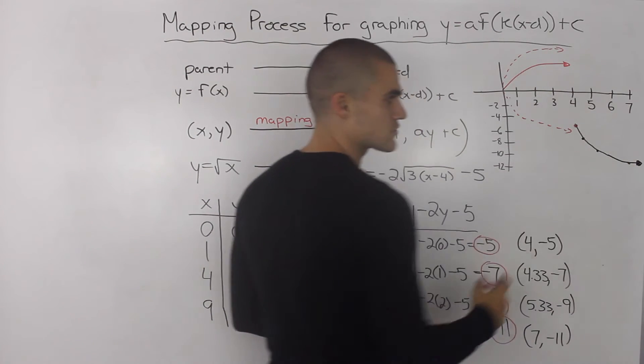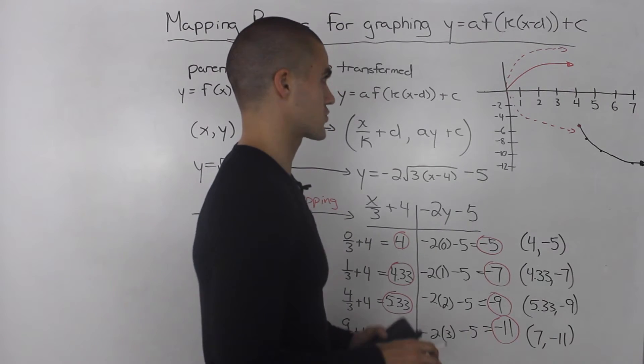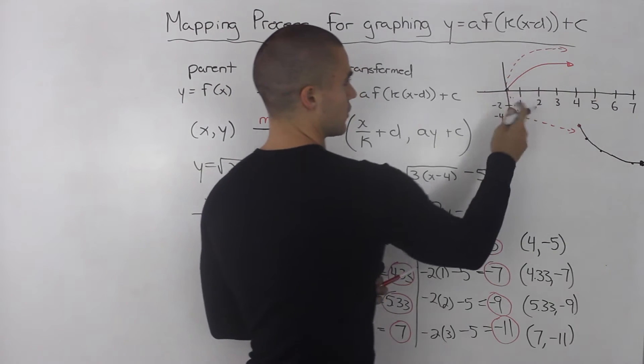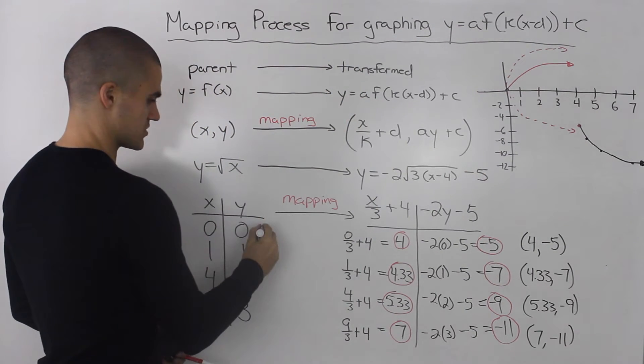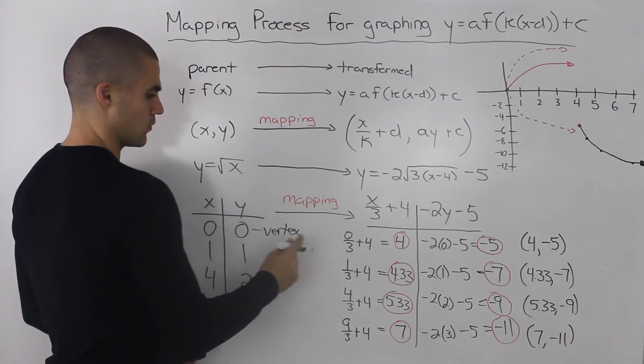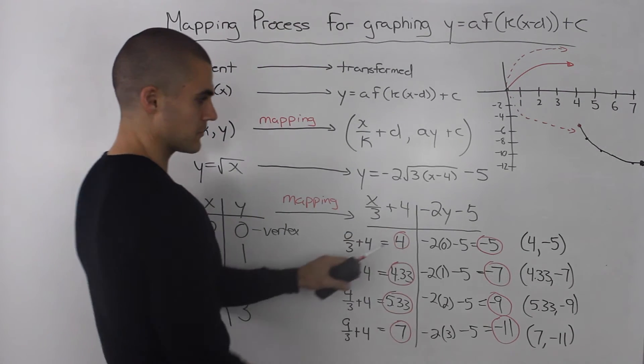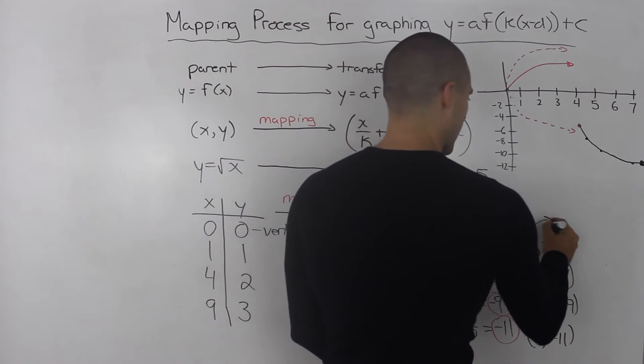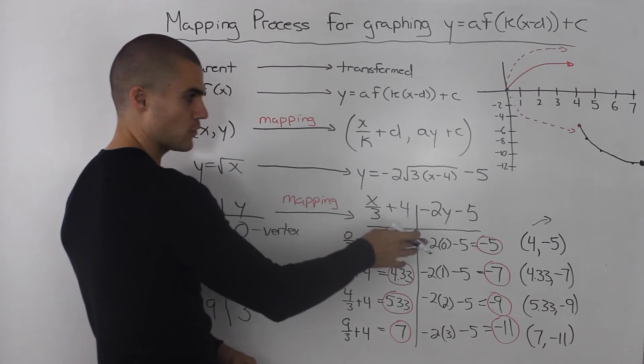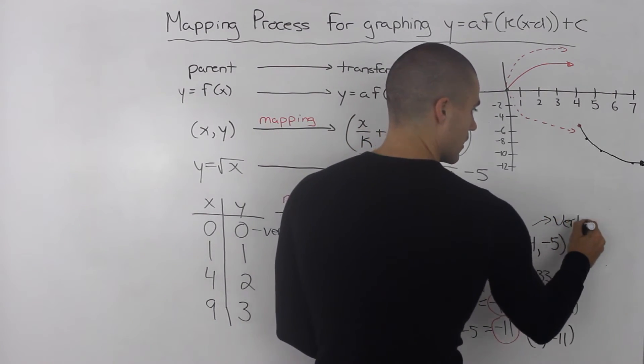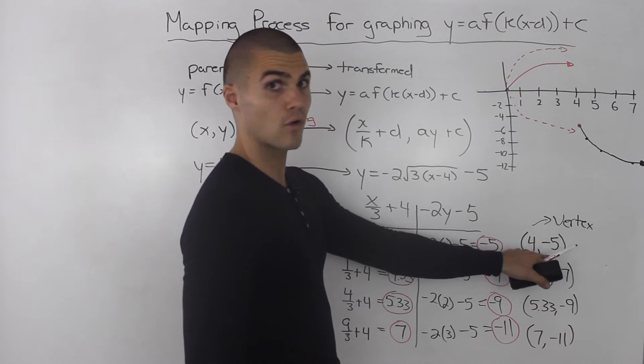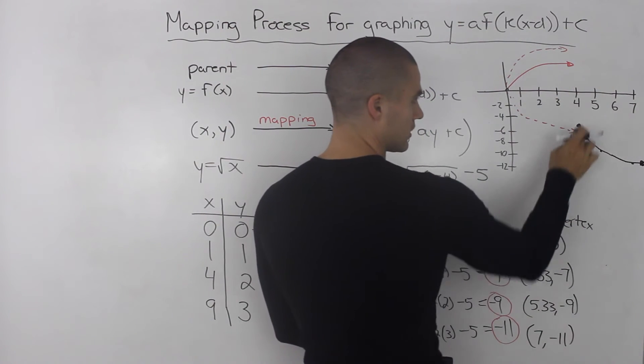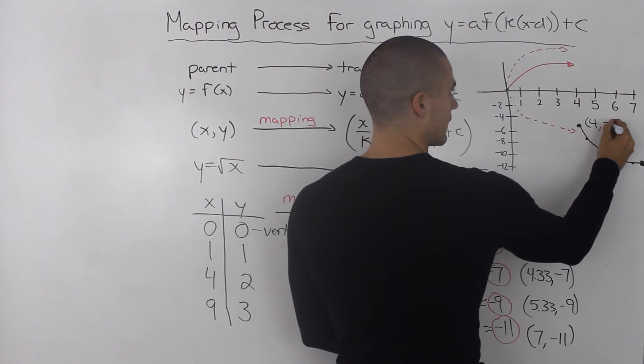One more point I want to make about this graph is that the vertex of the parent function is at 0, 0. This here represents the vertex. When we take the vertex and put it through the mapping process, we get the coordinate 4 and negative 5. The vertex that we take from the parent function and transform it ends up being the vertex of the transform function. Notice how it is the vertex of the transform function on our graph. This point here represents the 4 and negative 5.